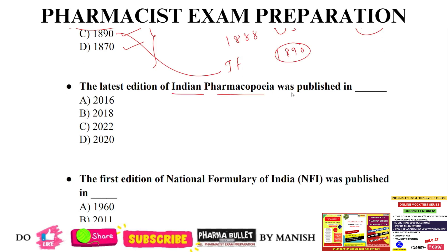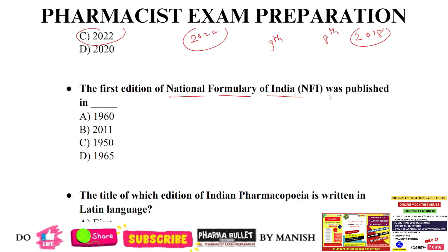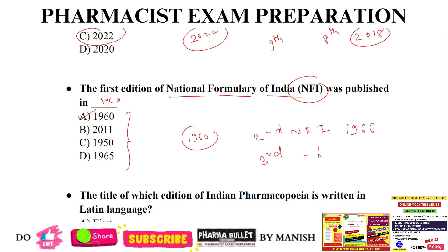The latest edition of Indian Pharmacopeia was published in which year? The correct answer is 2022, option C — this is the ninth edition of IP. The eighth edition was published in 2018. Then the first edition of the National Formulary of India was published in 1960, option A. Second edition of NFI: 1966. Third edition: 1979. Fourth edition: 2011. Fifth edition: 2016. Sixth edition (latest): 2021. These are all previous year questions.